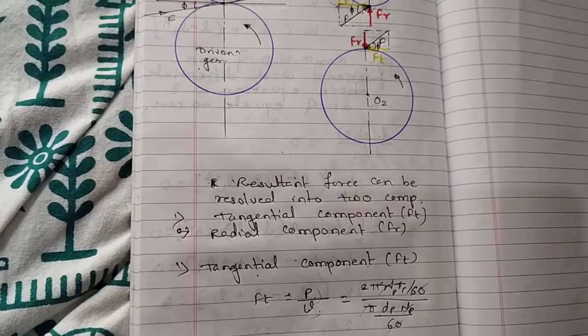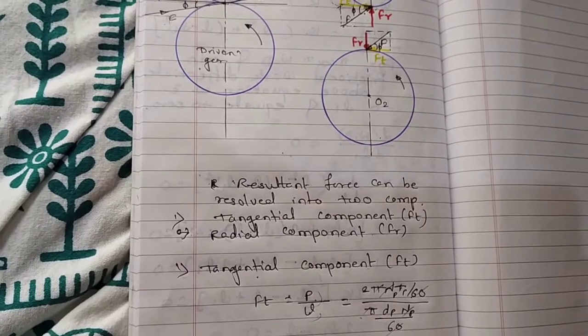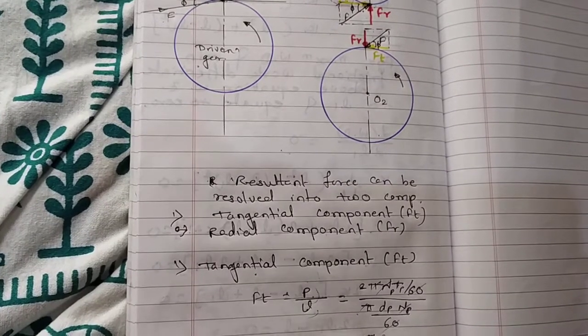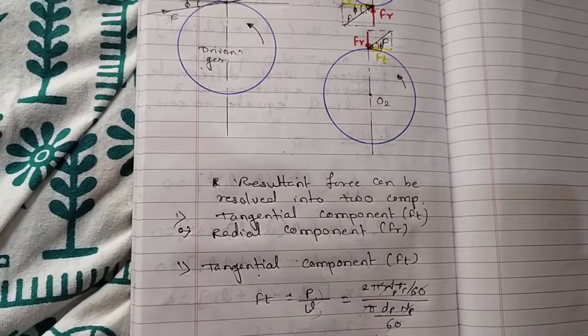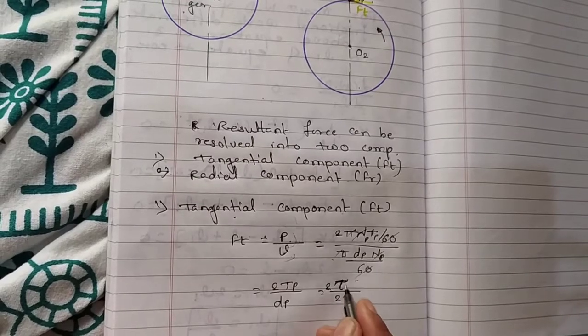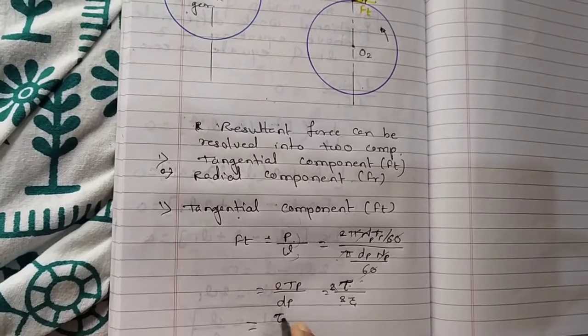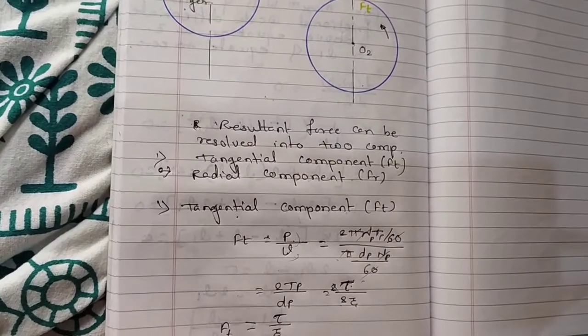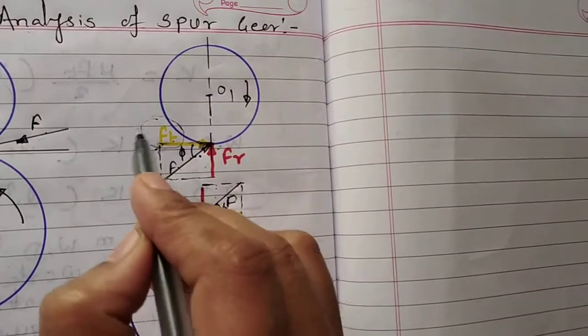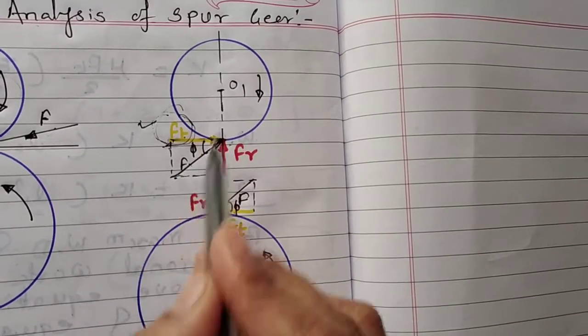What remains is 2T/Dp. Now instead of Dp, we can write 2R. T is nothing but the torque, so I'll put symbol τ. So it is 2τ/2R. The 2s get cancelled, so what remains is τ/R. We get the formula for Ft, tangential force equals τ/R. Now see this figure carefully. By using torque we can calculate this Ft.